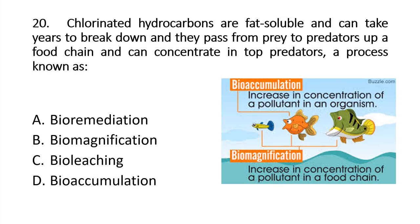Question 20: Chlorinated hydrocarbons are fat-soluble and can take years to break down. They pass from prey to predators and can concentrate in top predators, a process known as... Remember that organisms are linked through a food chain, and the combination of food chains is called a food web. If there is increased concentration of a pollutant in an organism, it's called bioaccumulation. If there is more concentration of a pollutant in a food chain, it's called biomagnification. Here, the right option is B: biomagnification.